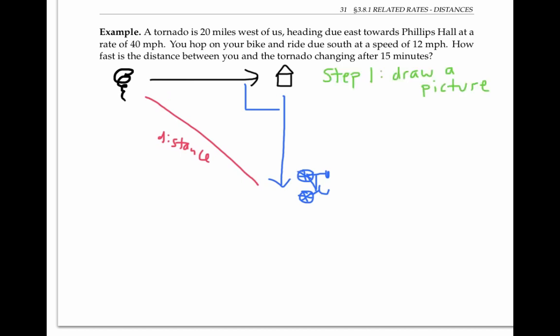Let's assign variables to the quantities of interest. I'll call the distance between the tornado and Phillips Hall, A. Although it starts at 20 miles, it varies with time, and therefore, it's a good idea to assign it a letter, a variable. I'll use B to refer to the distance between Phillips Hall and the bicycle, a quantity that also varies with time.